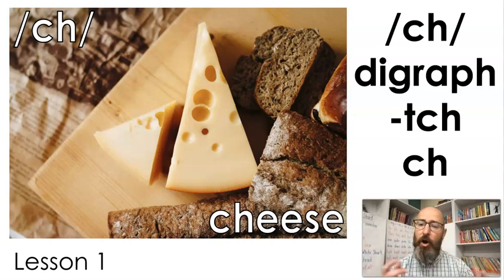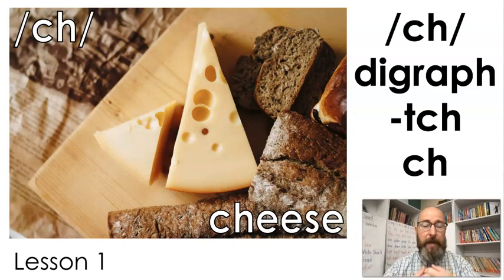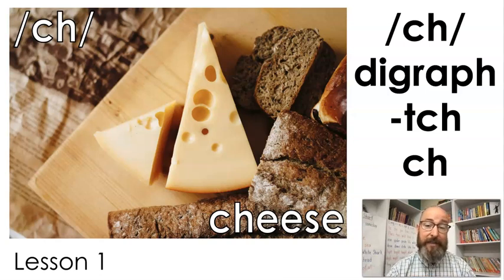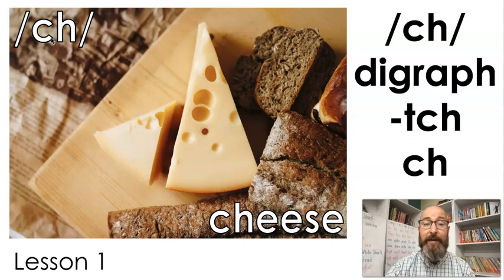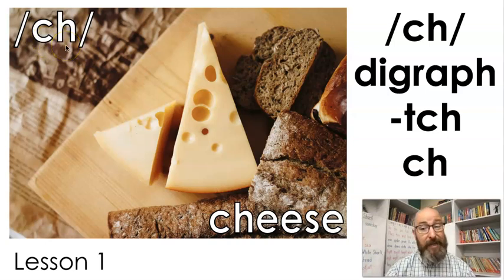Now, digraphs are letters that when they go together, they make one sound. An example — today what we're going to look at is the digraph that makes the ch sound. Can you say that? Ch.